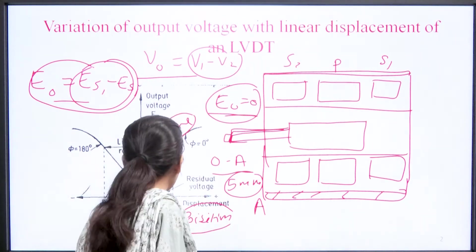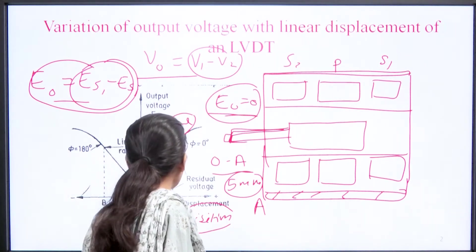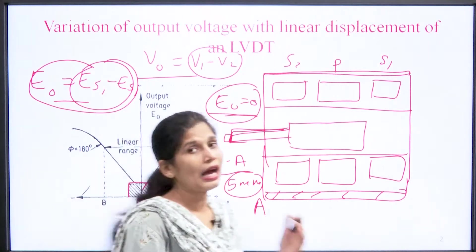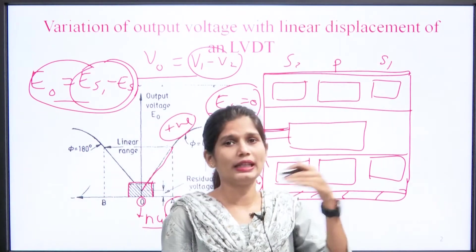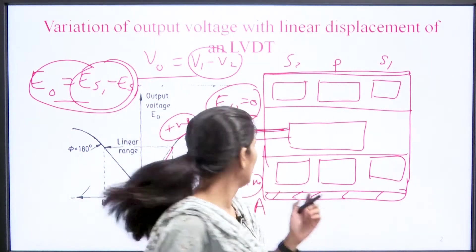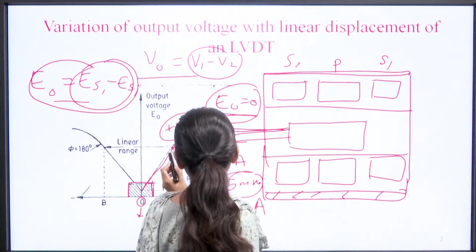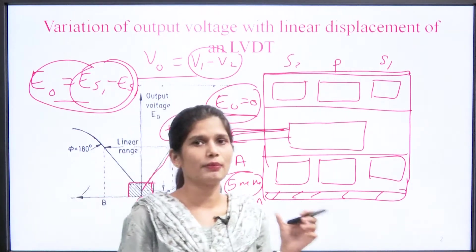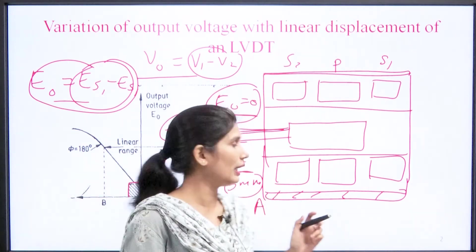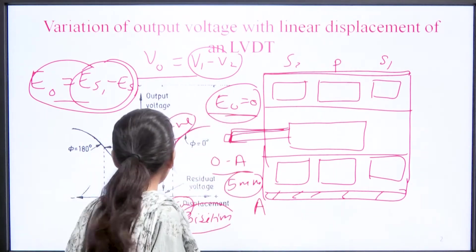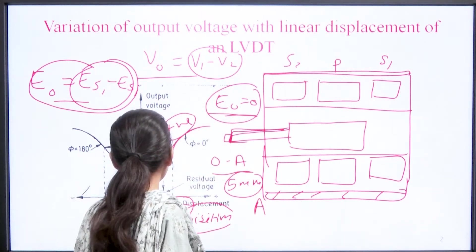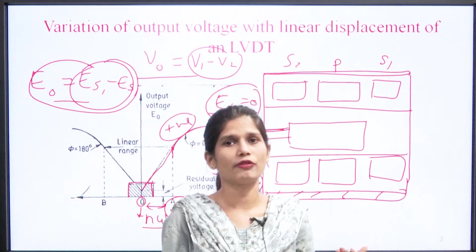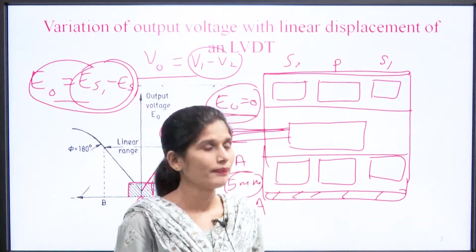After 5 mm, the graph becomes non-linear. So the linear pattern is followed from 0 to 5 mm displacement.